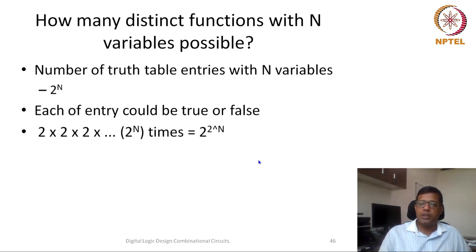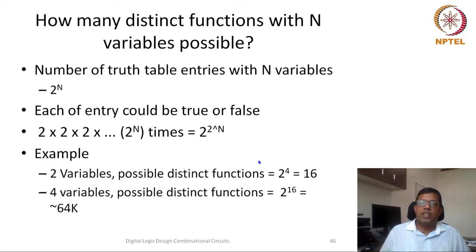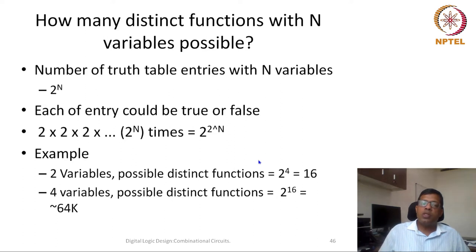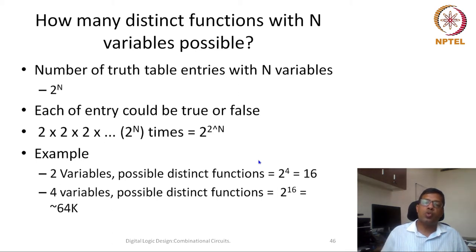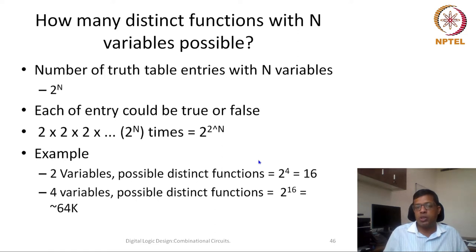How big is that number? If the number of variables are 2, distinct possibilities are 2^4, only 16. If the number of variables are 4, then the different possibilities of different functions is 2^16. From where does 16 come? Because 2^4 is 16. So the total number of truth table entries in a 4-variable function would be 16, and because all of these entries could be present or absent, the total number of functions possible is equal to 2^16, which is approximately equal to 64,000.